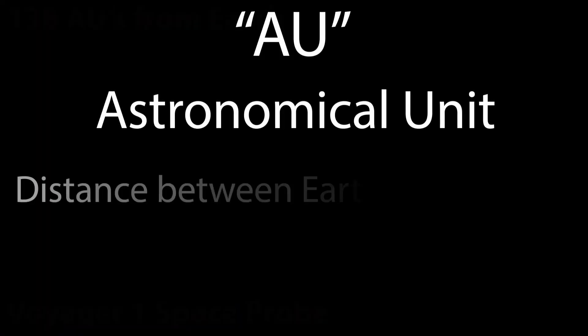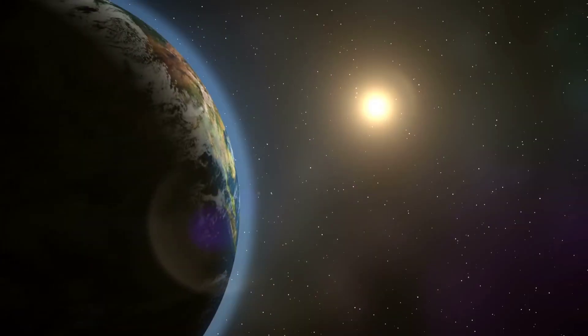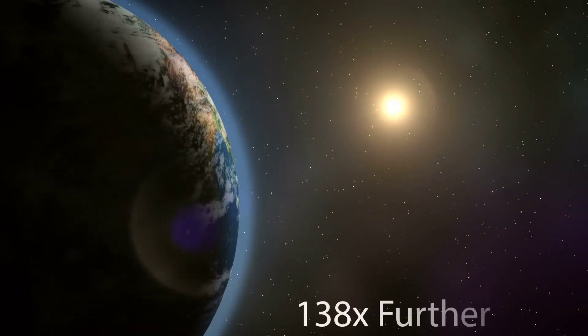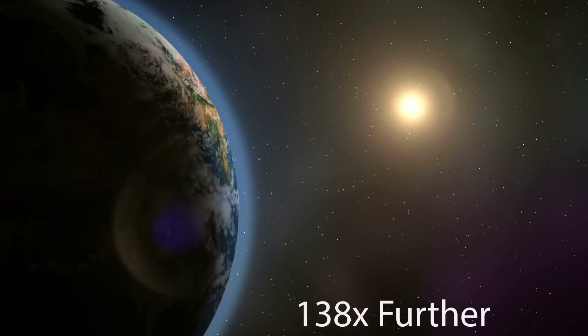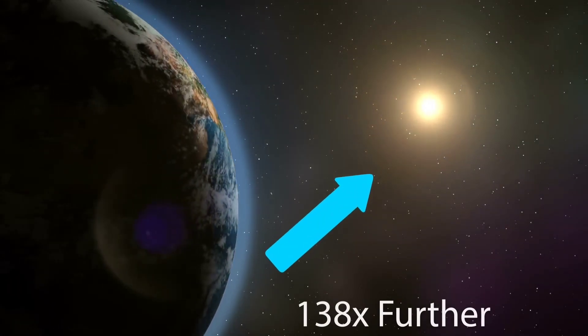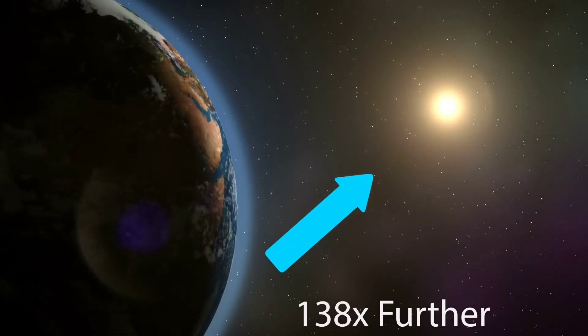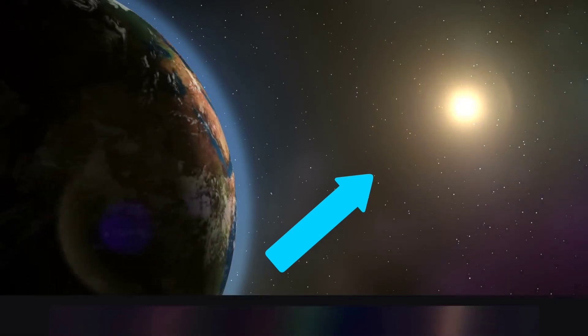When we zoom out even further away, we can find the Voyager 1 Space Probe, which is the furthest away man-made object from Earth. It is currently located 138 AU from the Earth, AU meaning astronomical unit, which is the distance between the Earth and Sun, which means that Voyager 1 is 138 times further away from us than the Sun is.